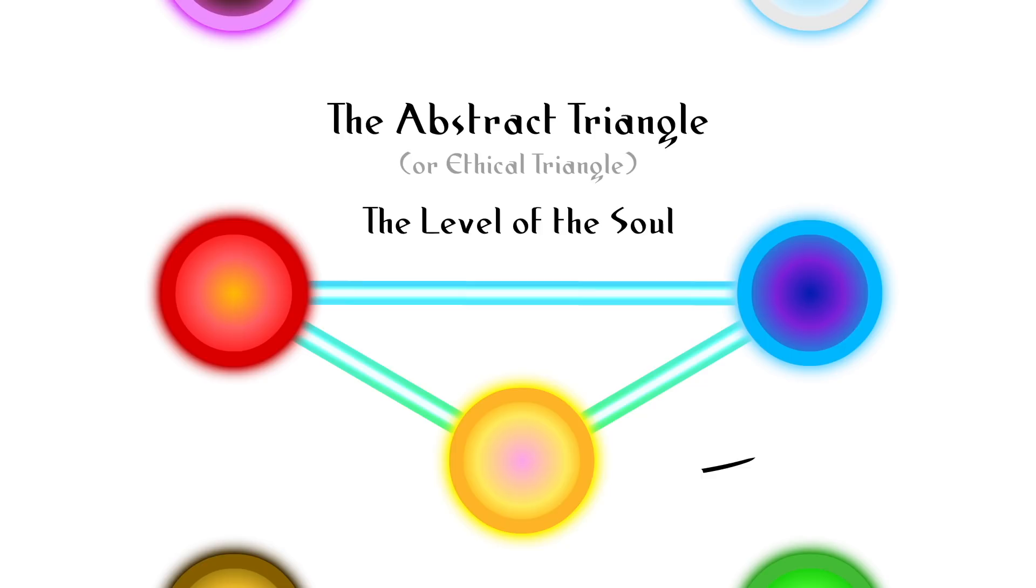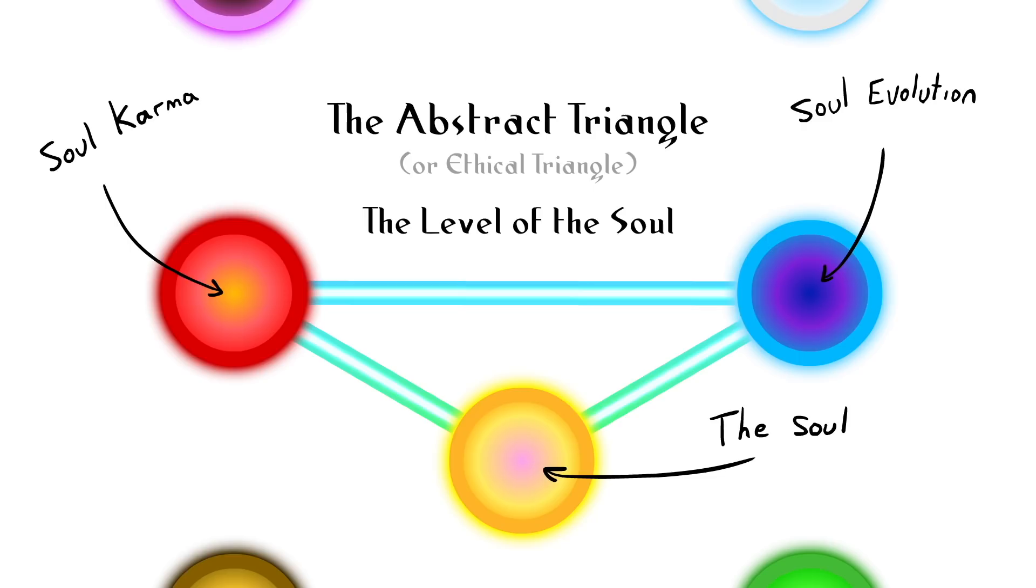The central triangle is called the abstract or ethical triangle, which is the level of the soul or the part of us which experiences infinite lifetimes and continues to evolve our spirit beyond the understanding of our physical existence.